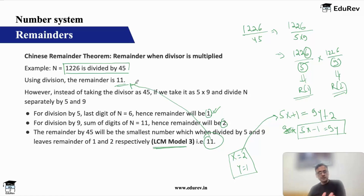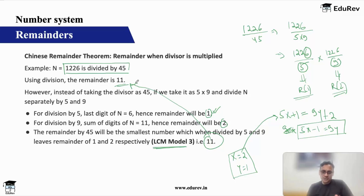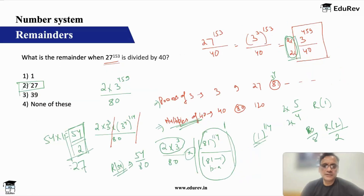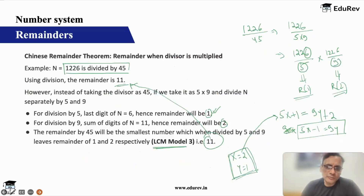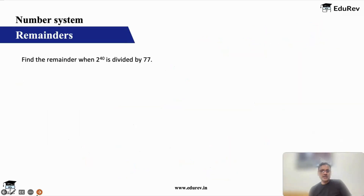So very useful concept. For the first time, we have split the divisor — we had only split the dividend before. But you can split the divisor also. We have split into two parts, and you can split into three parts also. In LCM model 3, we had done three parts also, and you can combine them later. If you look at the previous question on 40, you could have done 40 as 4 times 10, solved separately for 4 and for 10. Then your divisor becomes small and you can use cyclicity — because for 4, remainder can be maximum 3.